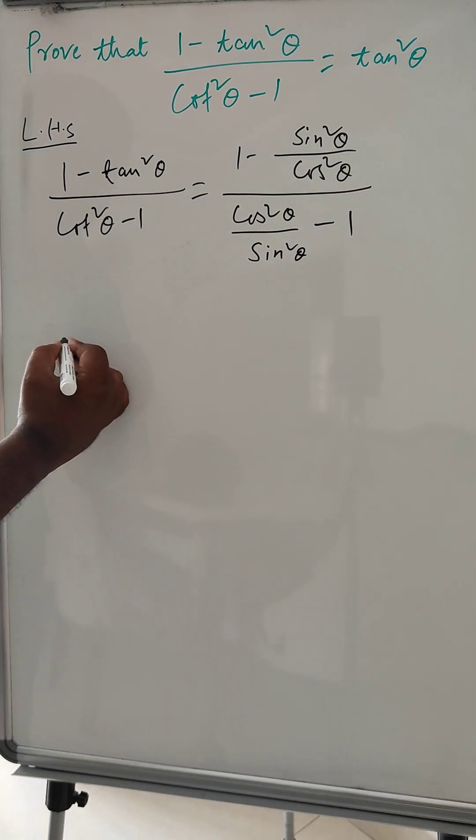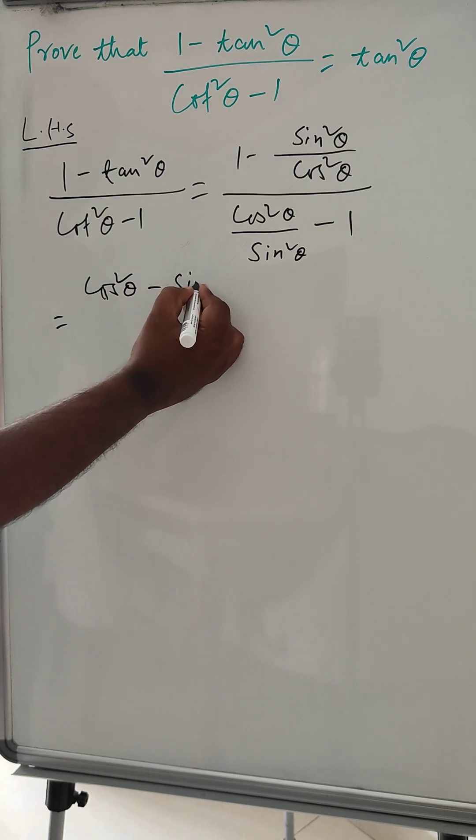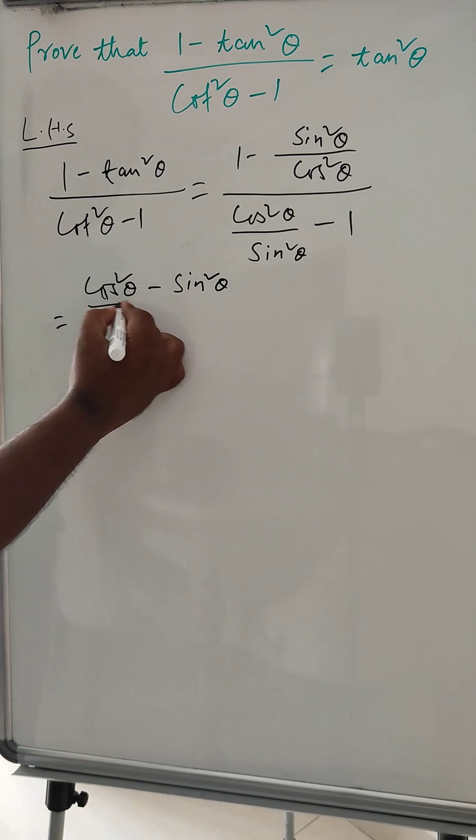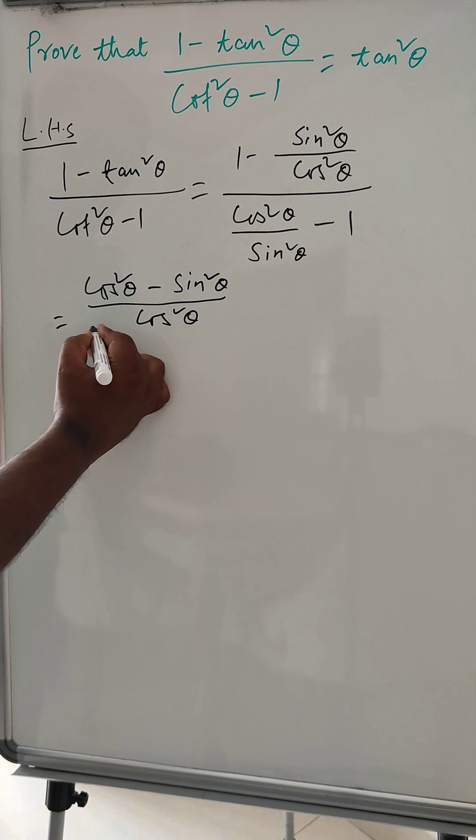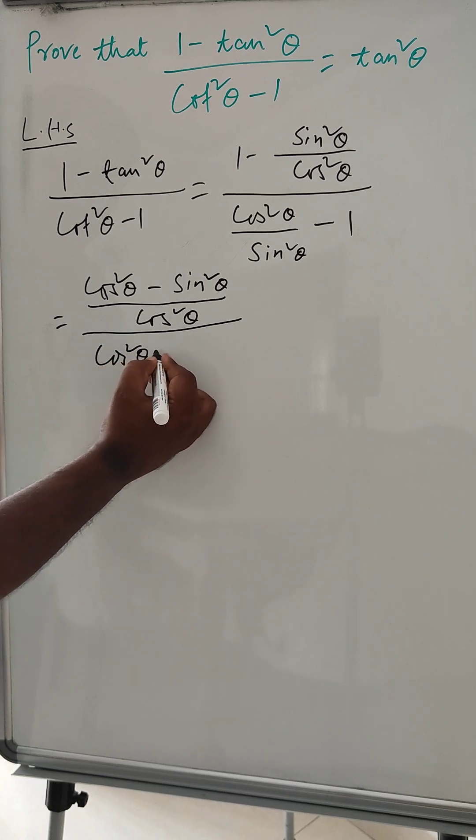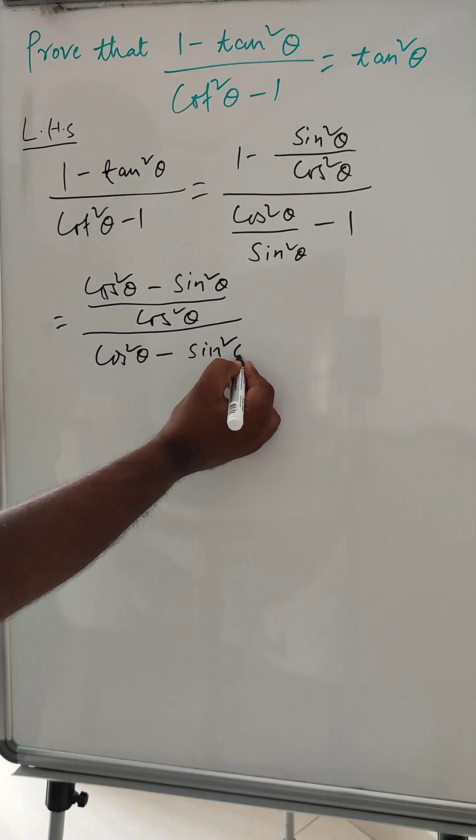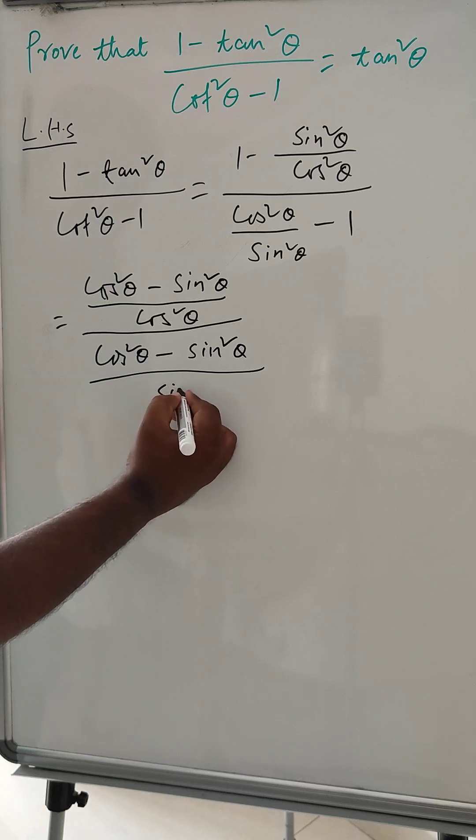So now, this we can do: cos square theta minus sin square theta divided by cos square theta, then cos square theta minus sin square theta divided by sin square.